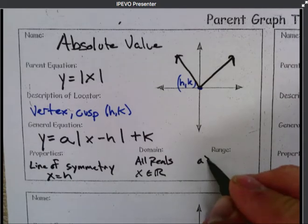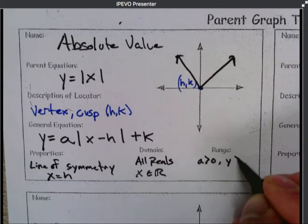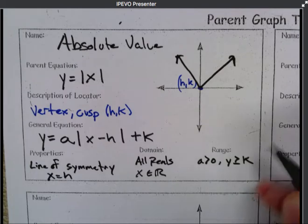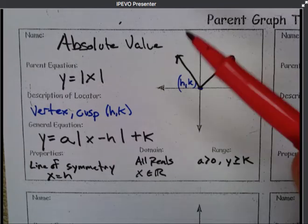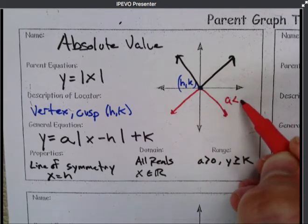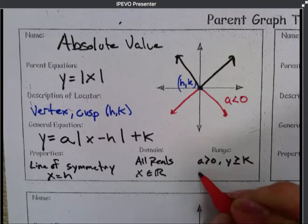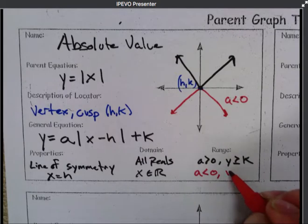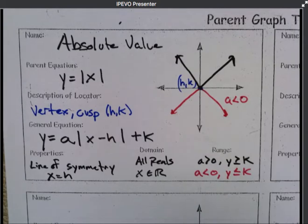Your range does depend upon what your k is, similar to your parabola. If a is greater than 0, then your range is going to be greater than or equal to k. But if I were to change this so that a was negative instead, like it had flipped it around, so here's where a is less than 0, then your range is less than or equal to k. And that would be your absolute value graph.